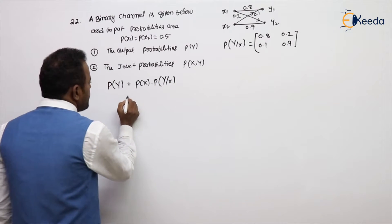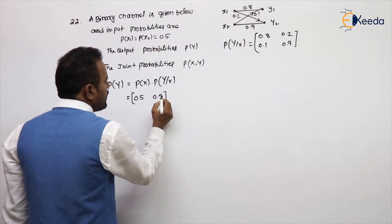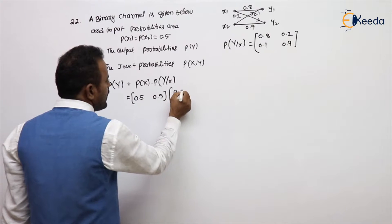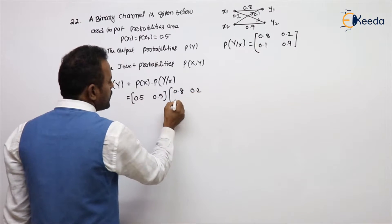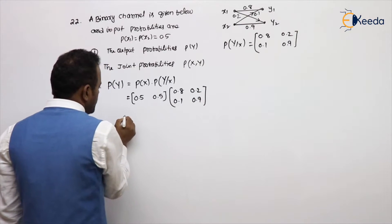What is the P(x)? 0.5, 0.5. P(y|x) that is given: 0.8, 0.2, 0.1, 0.9. Then multiply.